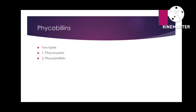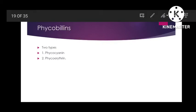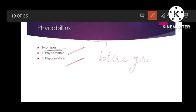From chlorophyll a at the reaction center, all the processes of photosynthesis and energy conversion take place. The second accessory pigments are the phycobilins, which are of two types: phycocyanin and phycoerythrin. These are found in blue-green algae.